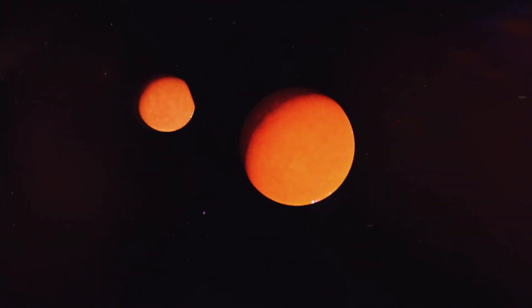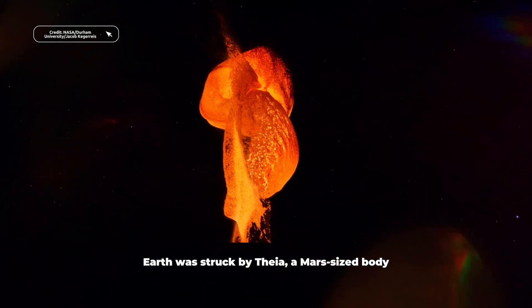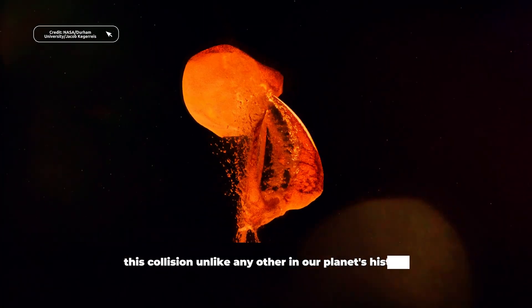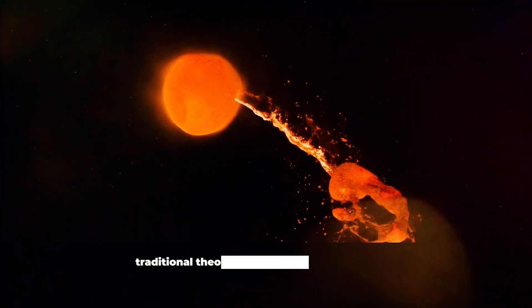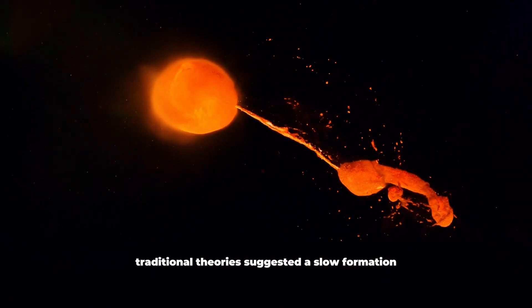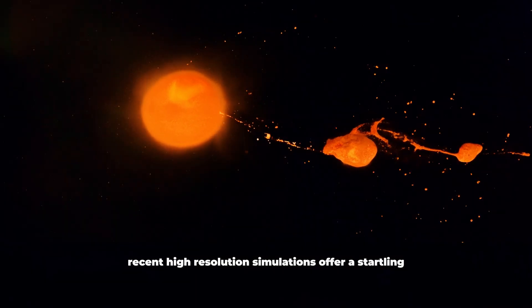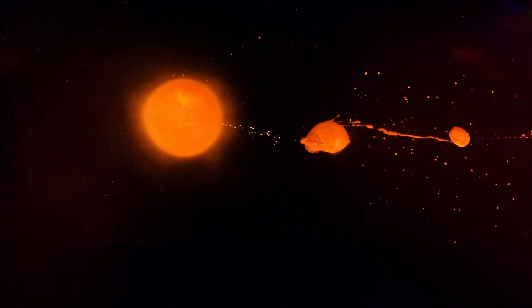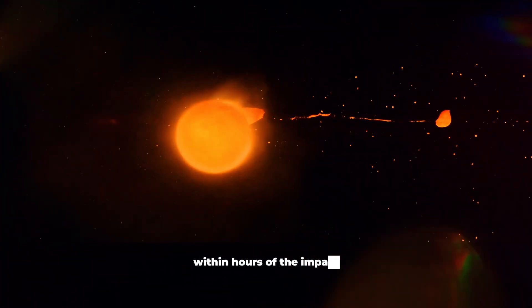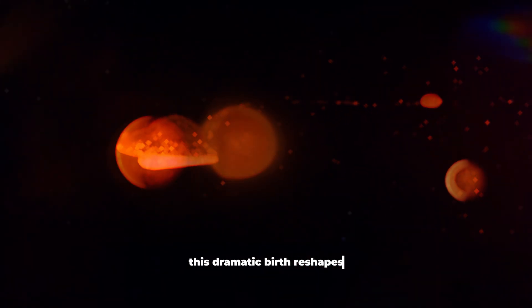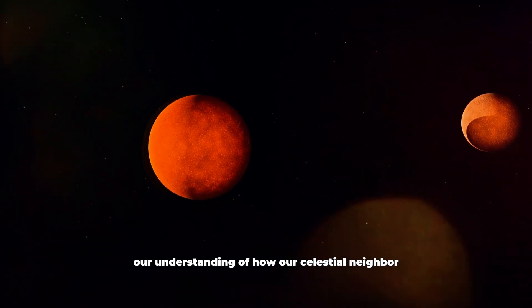Billions of years ago, Earth was struck by Theia, a Mars-sized body. This collision, unlike any other in our planet's history, gave birth to the Moon. While traditional theory suggested a slow formation from debris over months or years, recent high-resolution simulations offer a startling new perspective. The Moon may have formed almost instantaneously within hours of the impact. This dramatic birth reshapes our understanding of how our celestial neighbor came to be.